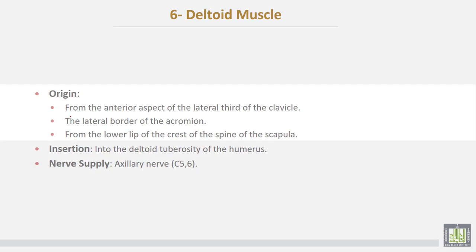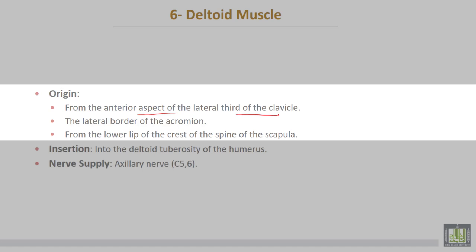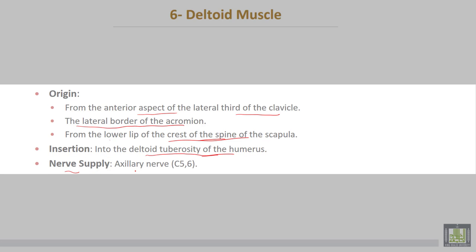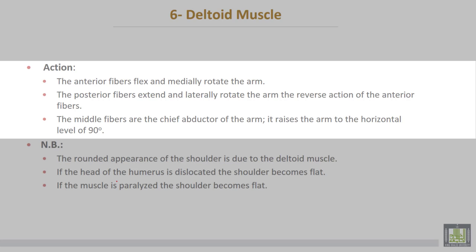The deltoid muscle takes origin from the anterior aspect of the lateral third of the clavicle, from the lateral border of the acromion process, and the third part from the lower lip of the crest of the spine of the scapula. It is inserted into the deltoid tuberosity of the humerus. Nerve supply for the deltoid muscle is the axillary nerve from cervical 5 and 6. Anterior fibers flex and medially rotate the arm. Posterior fibers extend and laterally rotate the arm, reversing the action of anterior fibers. The middle fibers are the chief abductor of the arm, raising it to the horizontal level, which is 90 degrees.